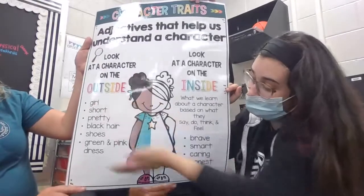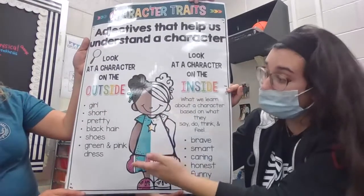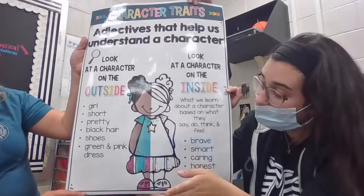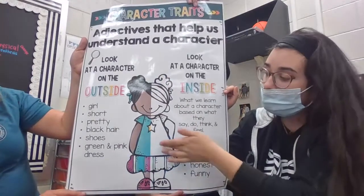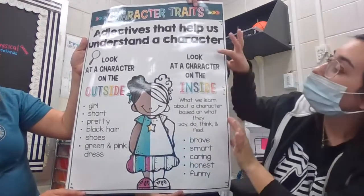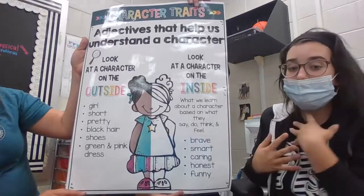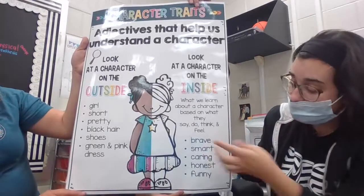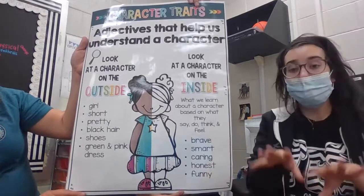So this person — she is a girl, she's pretty, she has black hair, she has shoes and a very nice pink and green dress. That's what she is on the outside. On the inside, she could be brave, smart, caring, honest, funny.